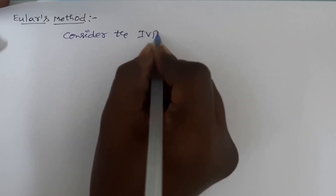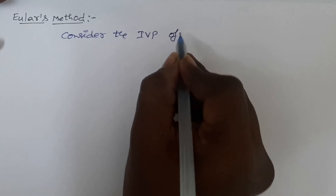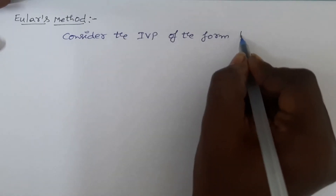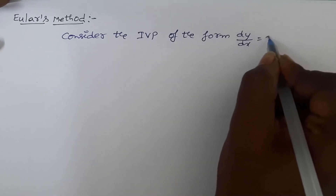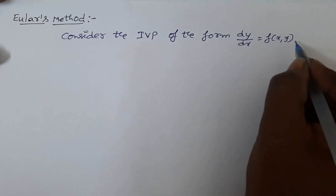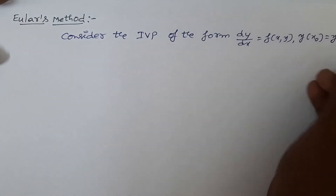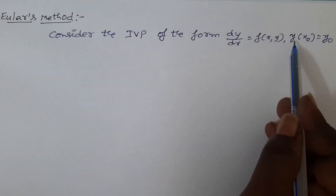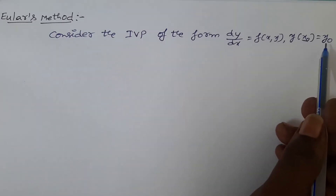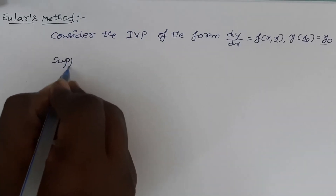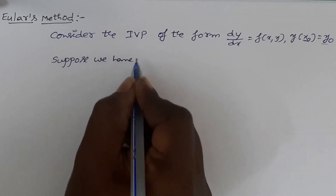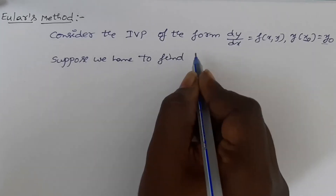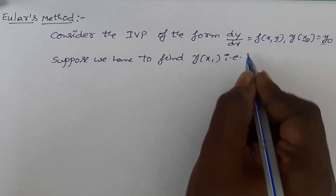See the procedure of this Euler's method. First, consider the initial value problem of the form dy/dx = f(x, y), where y at x₀ is equal to y₀. Here, y value at x₀ is provided as y₀. Suppose we have to find y value at x₁, which is also represented by y₁.